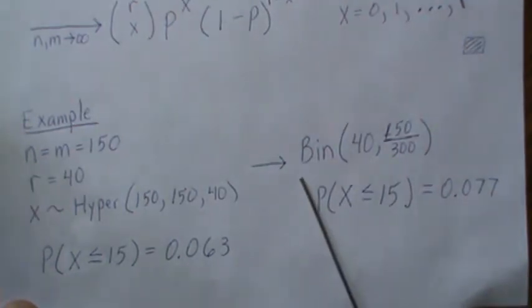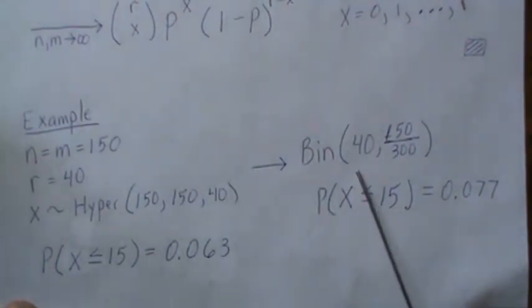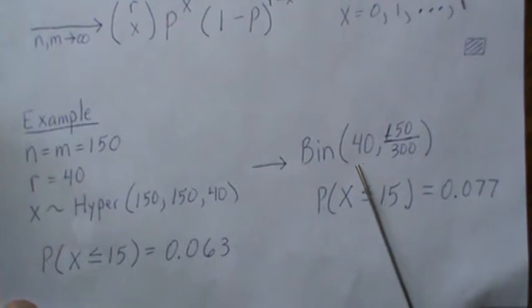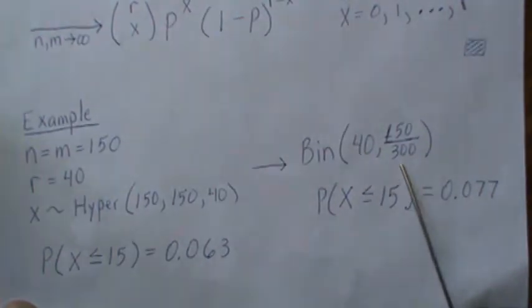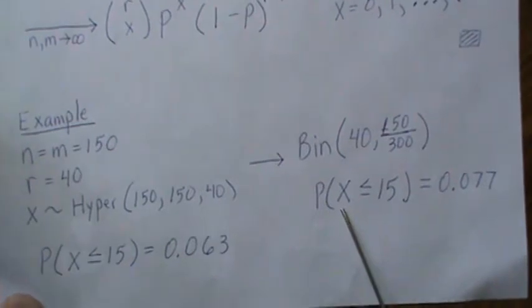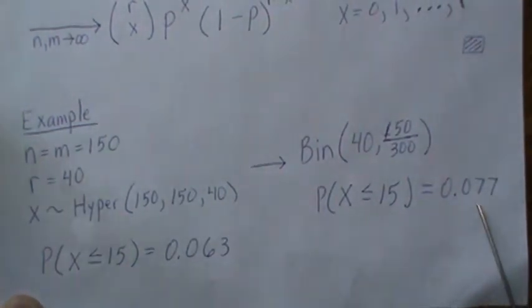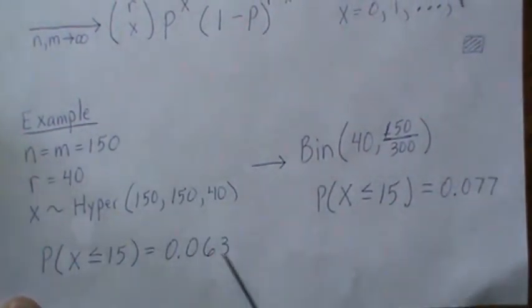Now if we use its limiting distribution of binomial of 40 and 150 over 300, then the probability that x is less than 15 is 0.077. So they're pretty close. And this becomes exact as m and n go to infinity.